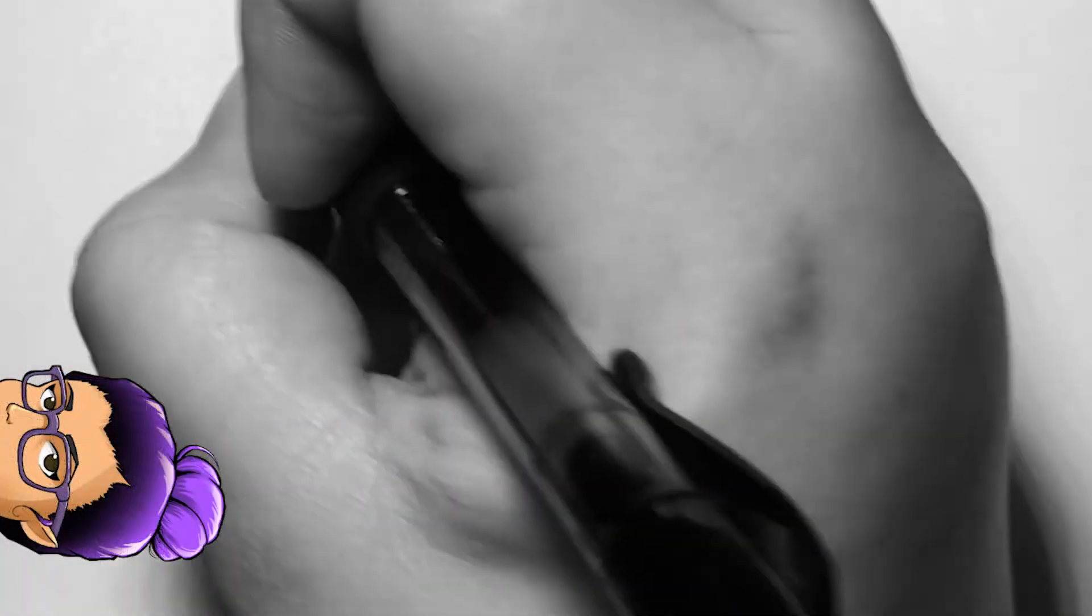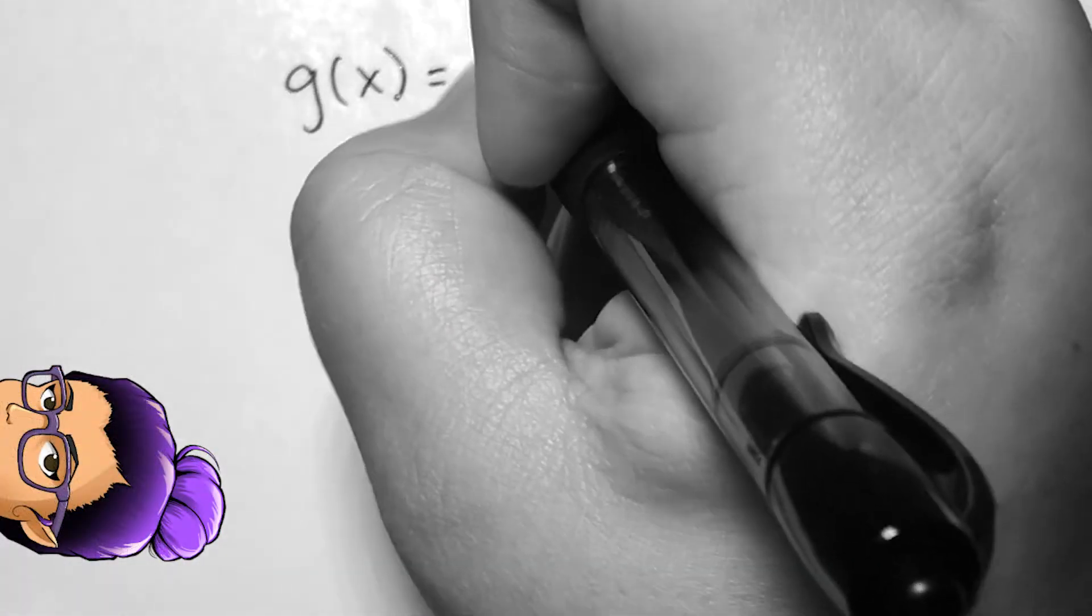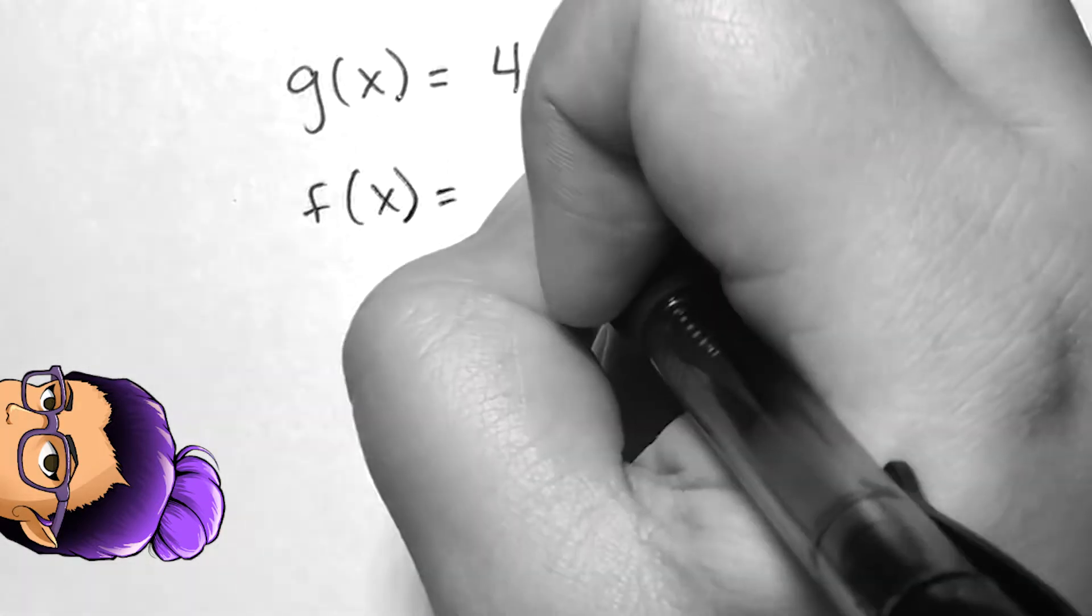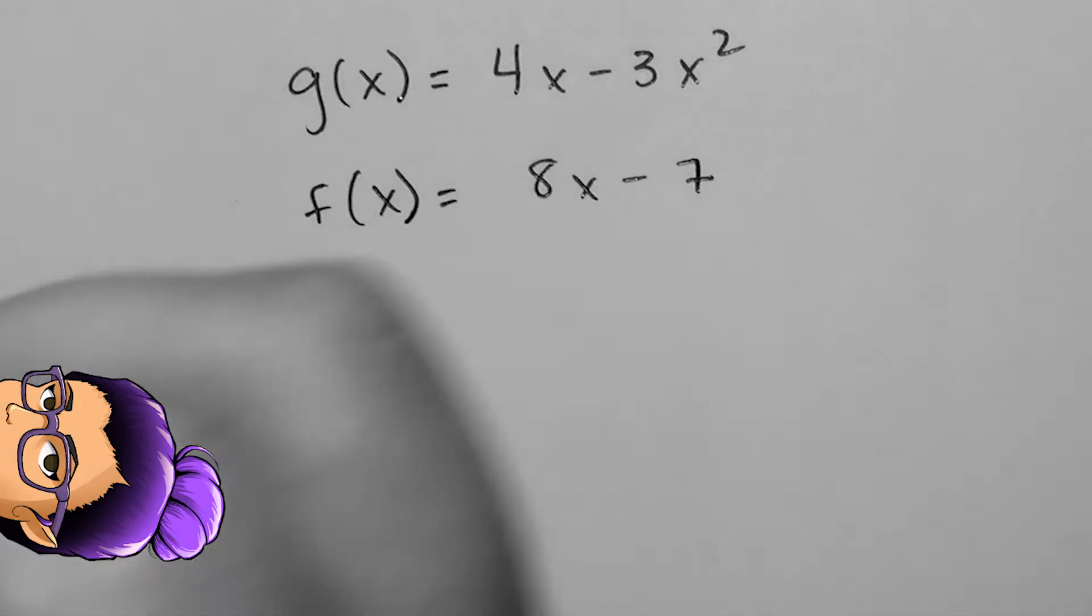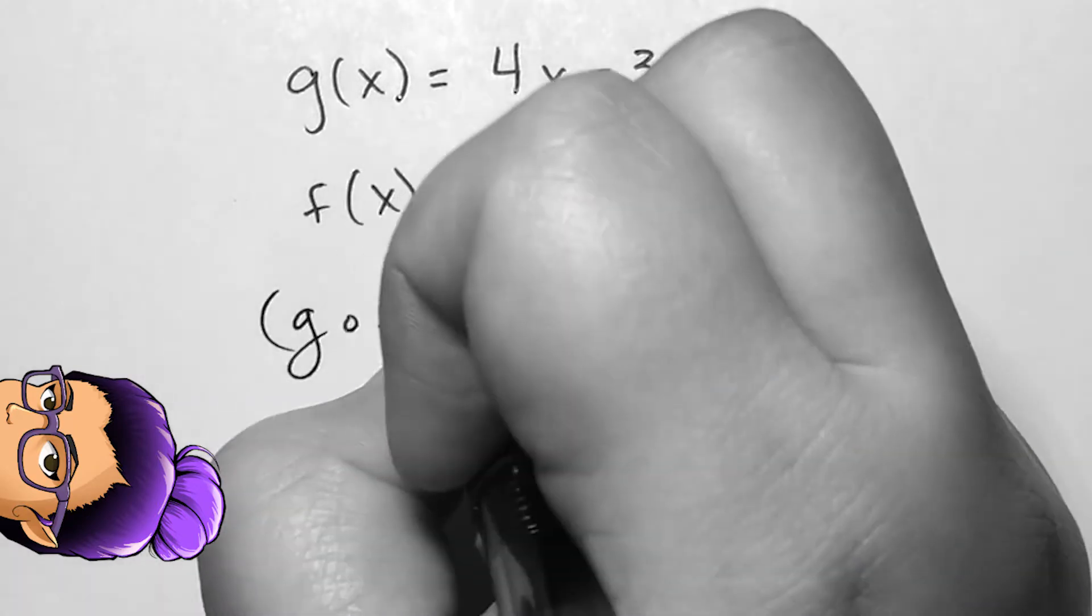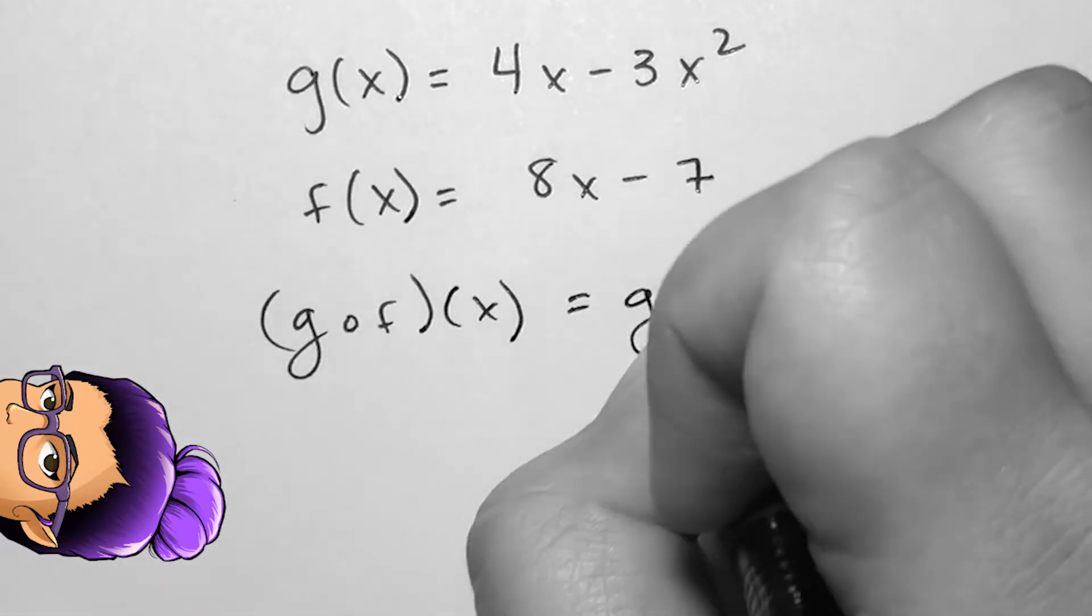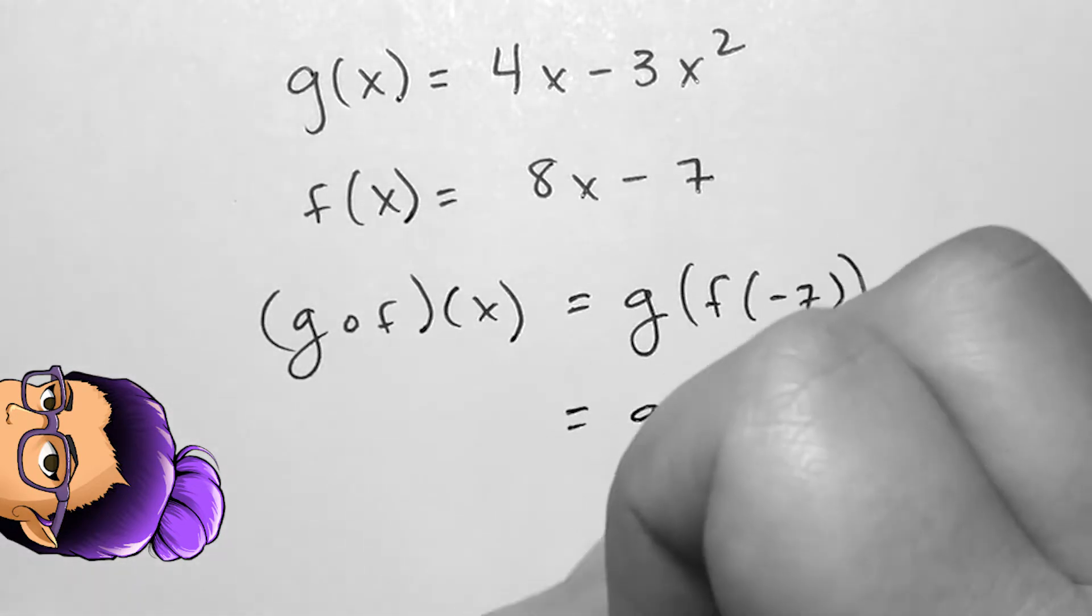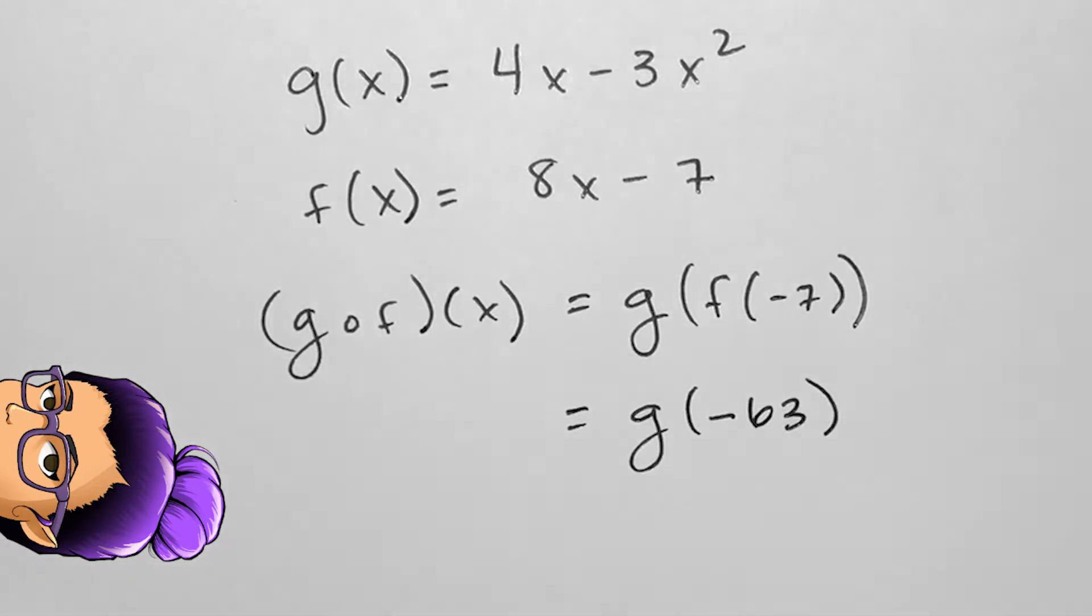If g of x is 4x minus 3x squared and f of x is 8x minus 7, then in order to find g composed with f evaluated at negative 7, I need to find f of negative 7, find the output, then plug that into g. f of negative 7 is negative 63. We now need to find g of negative 63, which is negative 12,159.